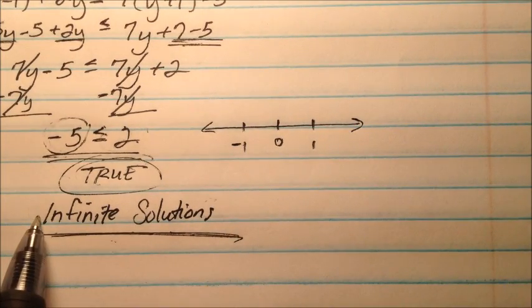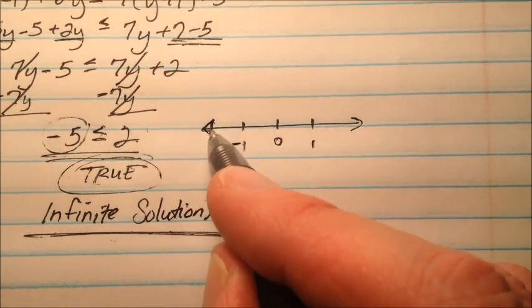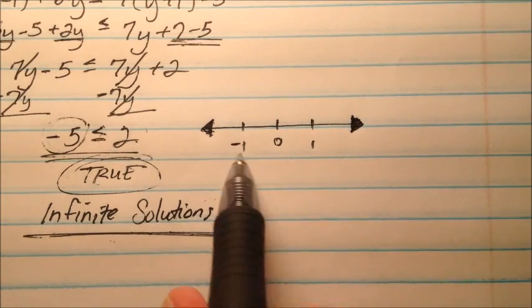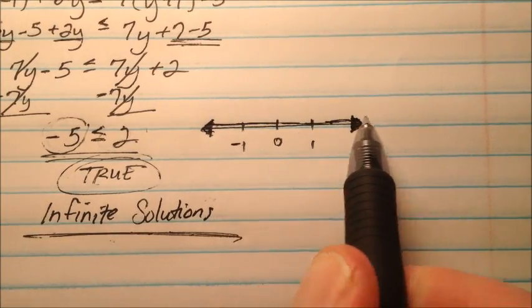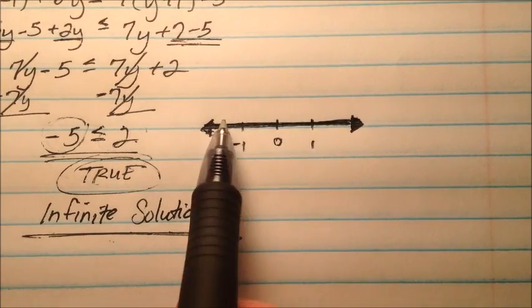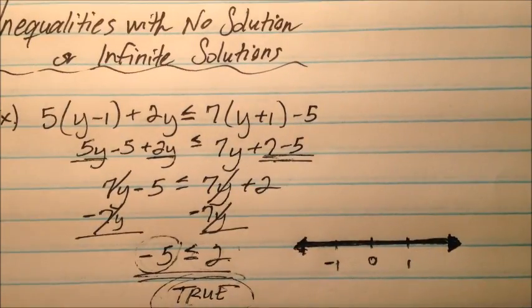So if it's infinite solutions, what that means is that every single number on a number line will work. All real numbers will make this so. So what happens now is I'm going to shade my entire number line, because every number on the number line is going to make this inequality true.